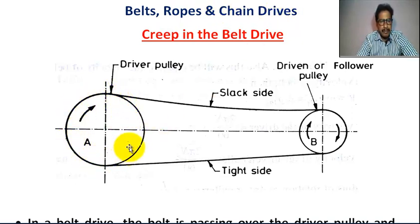A is the driver pulley rotating in the clockwise direction. B is the driven pulley or follower pulley, also rotating clockwise. This is the belt. The belt from driver pulley to follower pulley is called the slack side. The belt from follower pulley to driver pulley is called the tight side.